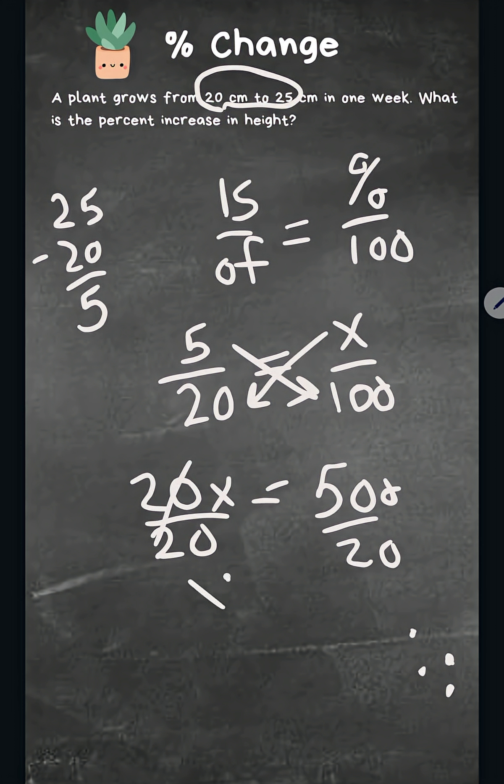Okay, these cancel. So x equals 25%. So it increased in one week 25%. I hope that was helpful.